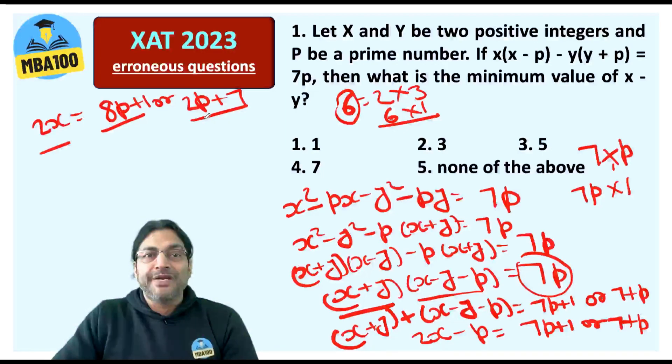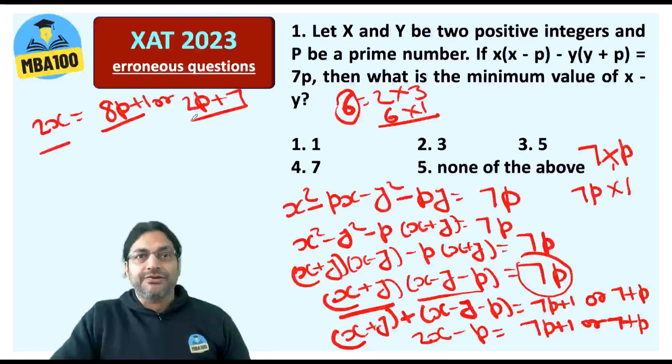They expected us to get the minimum value of X - Y when no value of X - Y is possible. This was the first error in this question in XAT 2023. Many people realized that there was some error in the problem.